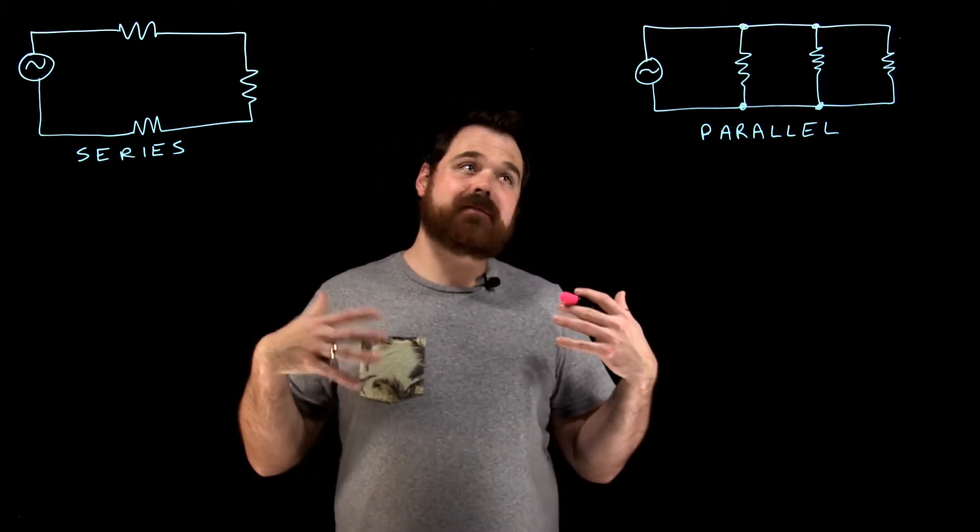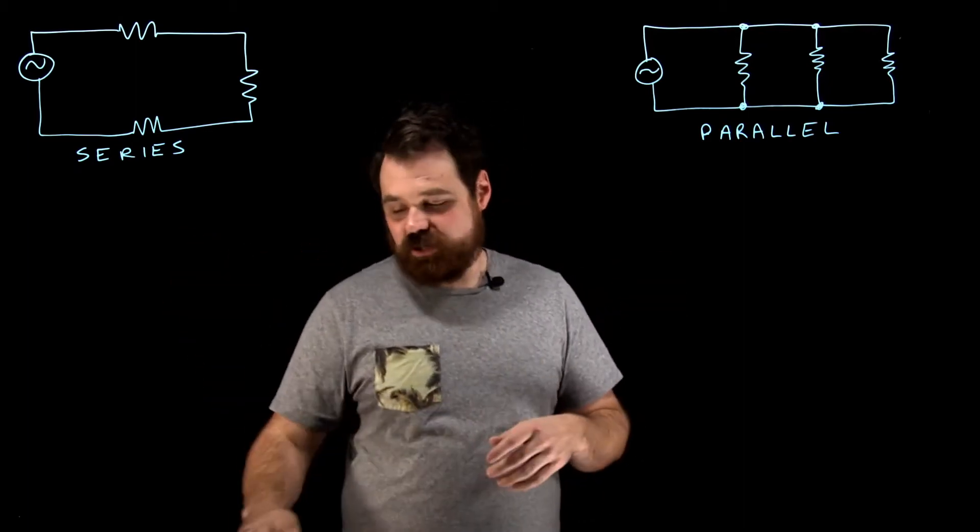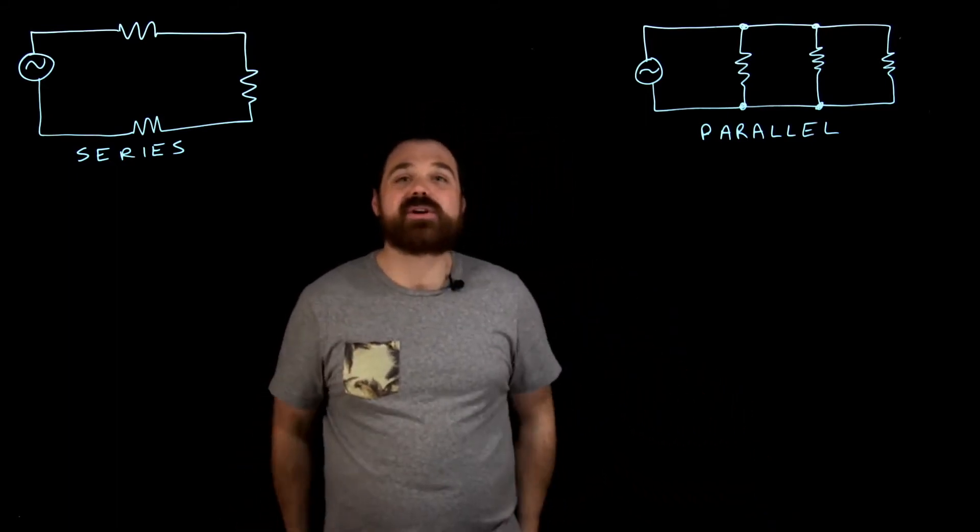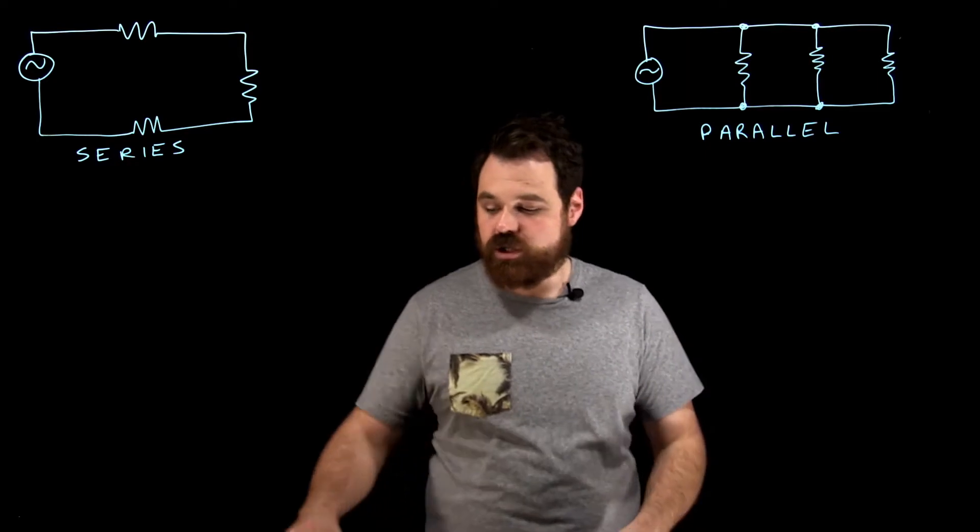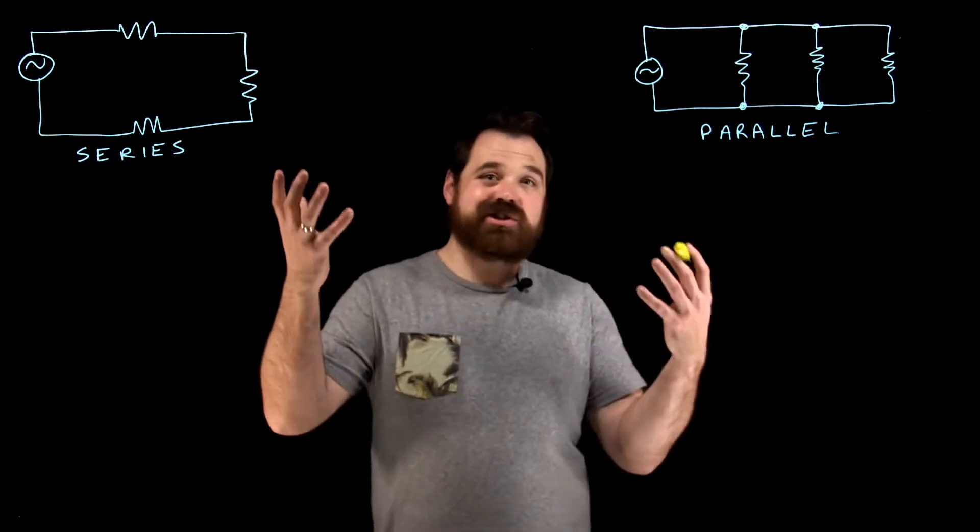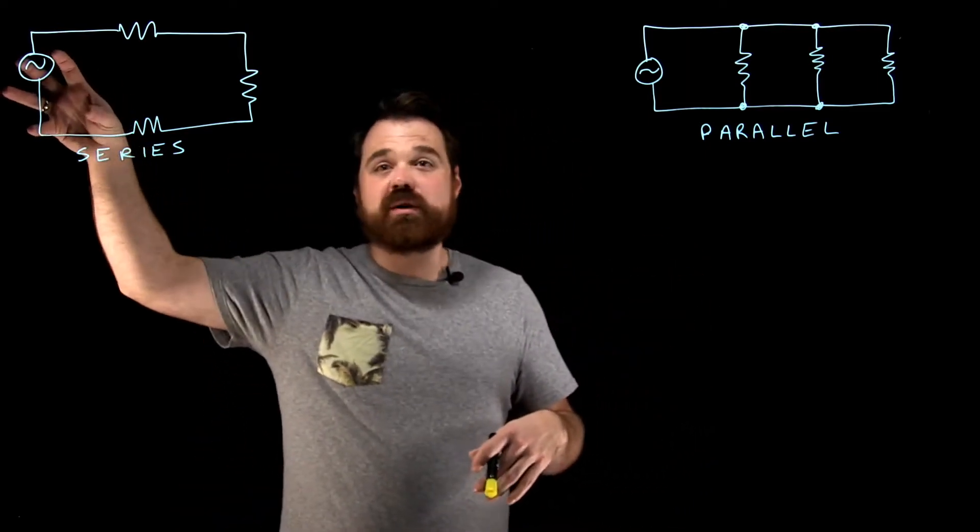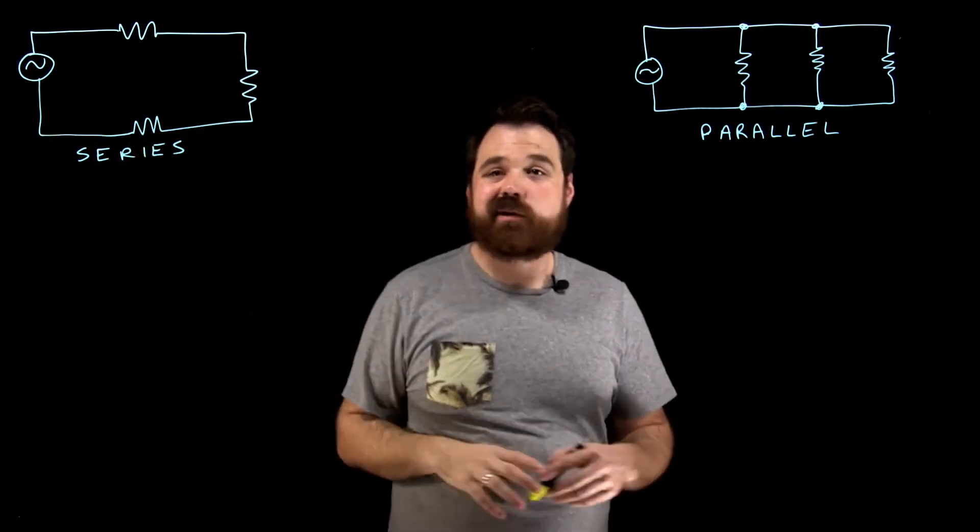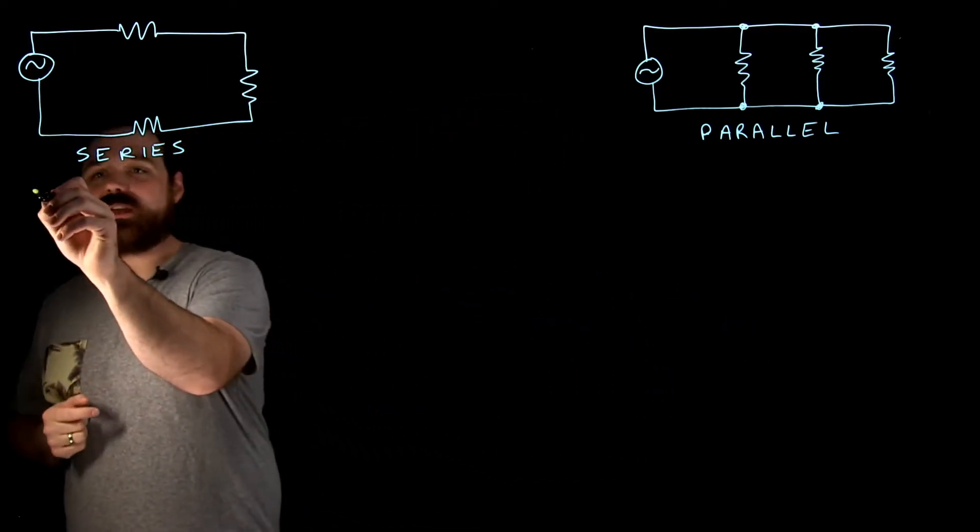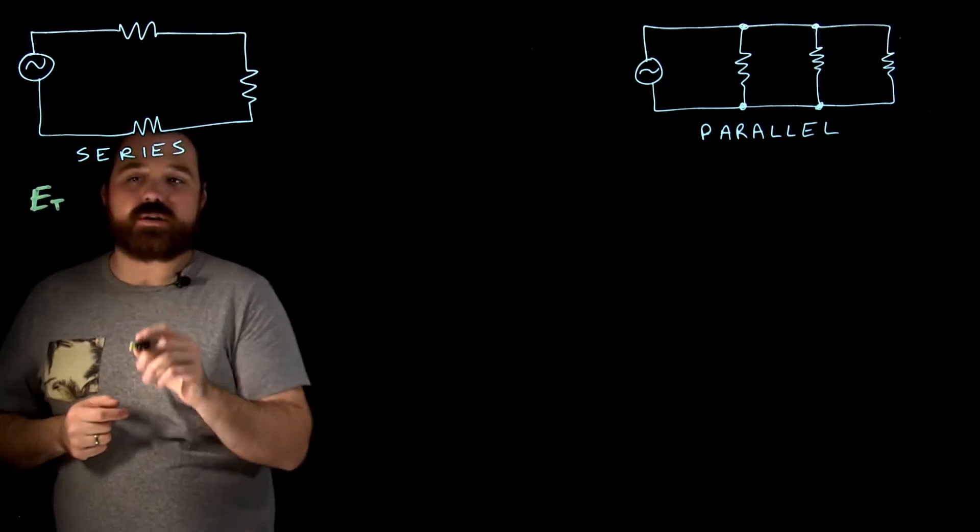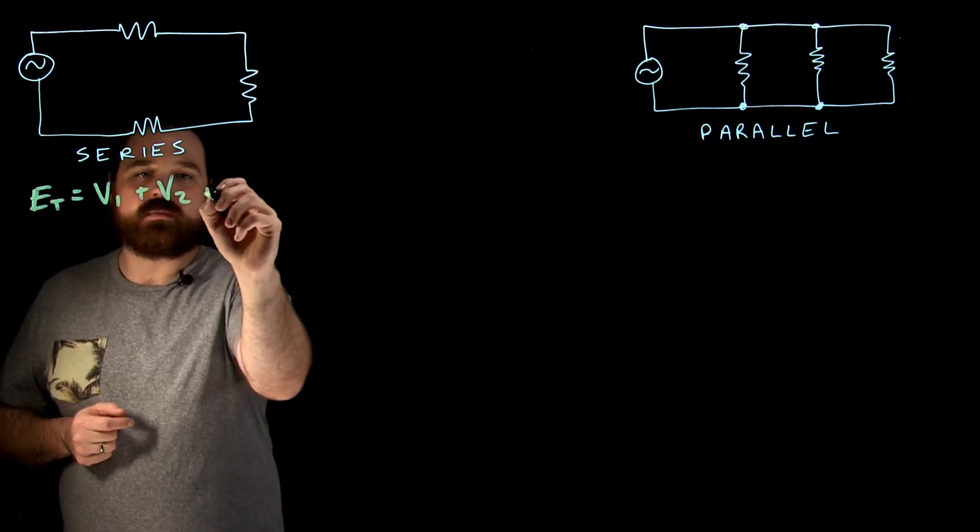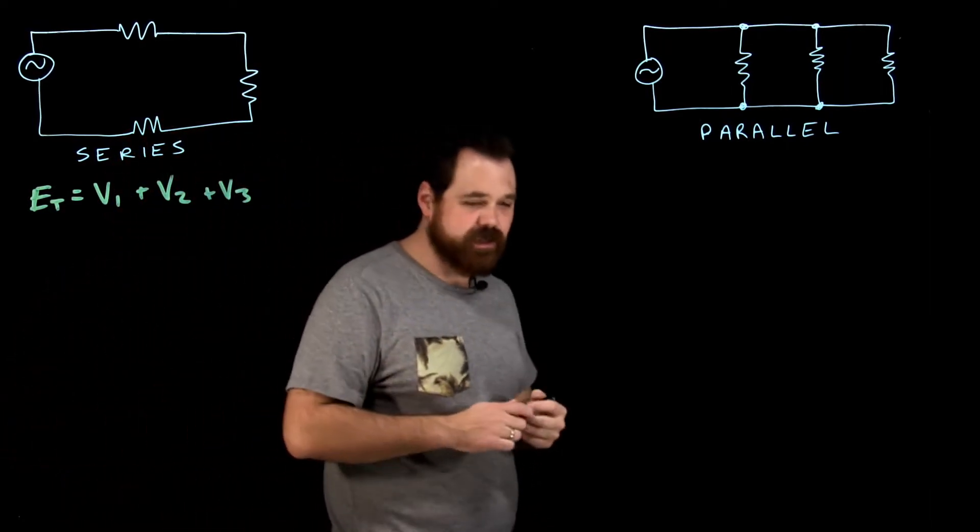Kirchhoff's voltage law tells me that all voltages in a closed loop equal zero. Let's start with series. If I have a source voltage, all of my voltage drops across my load have to equal zero. What we see here is E total, or our source voltage, equals V1 plus V2 plus V3. Our voltages add up directly.